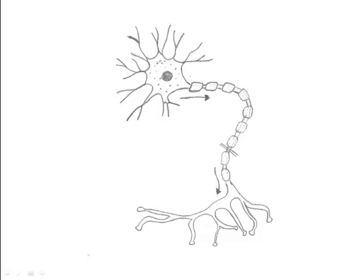All neurons have three parts: the cell body, the dendrites, and the axon.